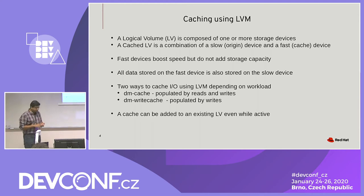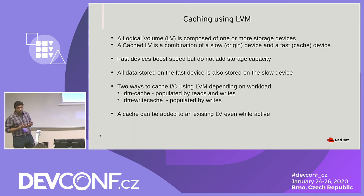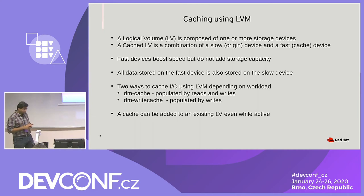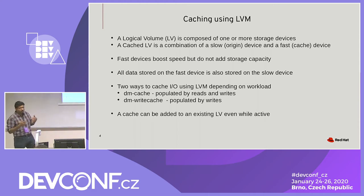Caches can be added to logical volumes which have active file systems on them, so you may not get a performance hit during addition of the cache. Both DM targets integrated with LVM let you do that. There are other caching solutions where it's non-trivial — they would wipe the origin device when you set up the cache, making it difficult to set up caching on an active file system without unmounting and wiping it. That's one of the main advantages of using LVM-integrated caching methods.